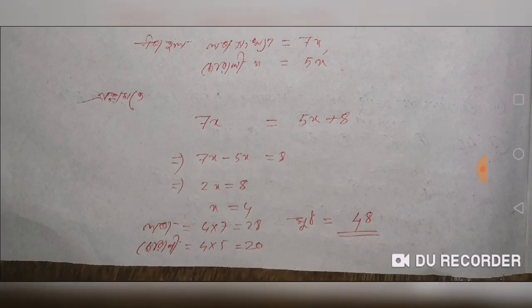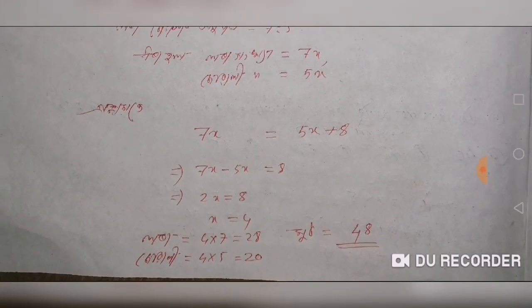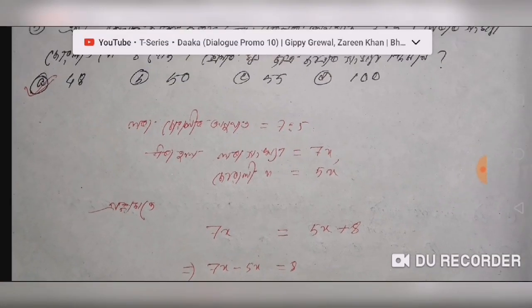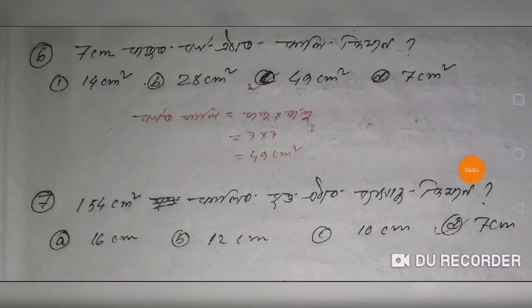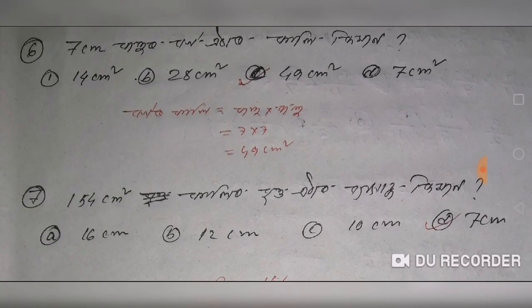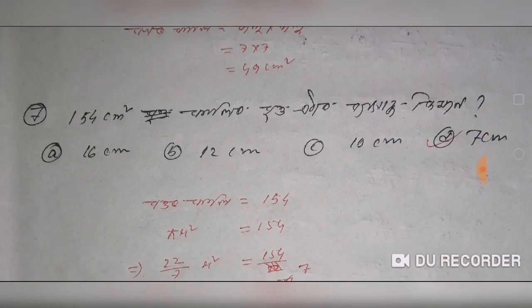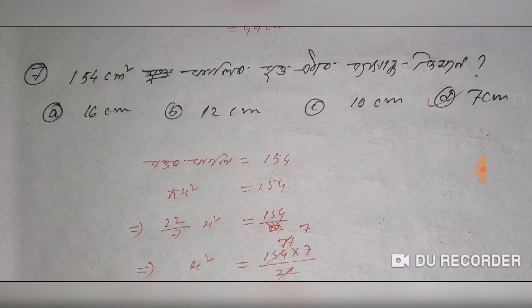So this is 5x: 5 times 4 equals 20, and the first answer is 48. We have a question: because 7 times 7 equals 49 cm². Option 3 in the question is 154 cm².